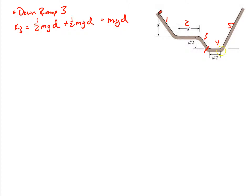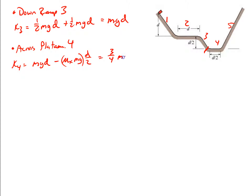Now going across the second plateau: we start with mgd and subtract the frictional energy loss. The distance is d over 2, so we subtract mu-k times mg times d over 2. With mu-k equal to 0.5, that's 0.5 times mg times d over 2, which equals one-quarter mgd. So we take mgd minus one-quarter mgd, leaving us with three-quarters mgd.